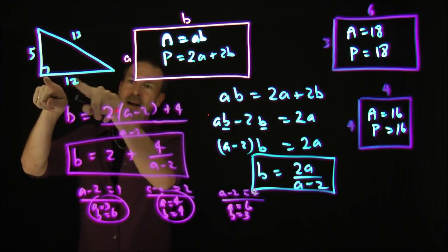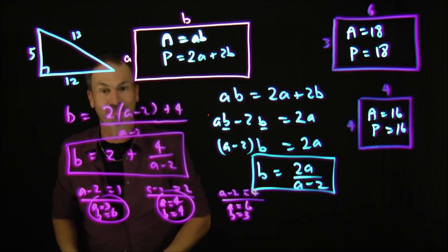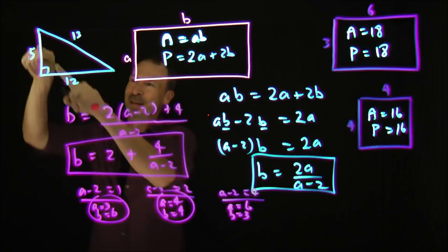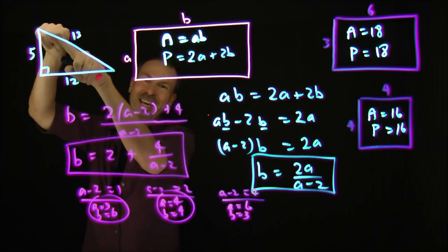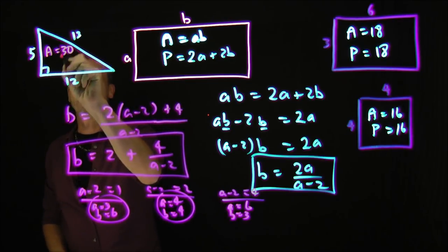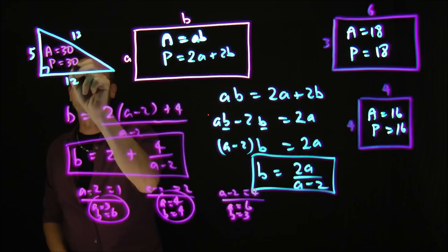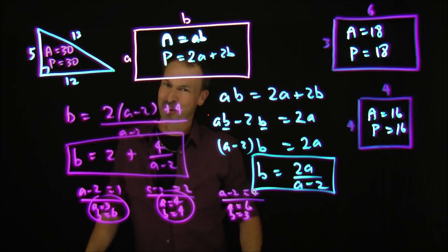The area of this thing, the area would be half the base, so half of 12 is 6 times height 5, area is 30. What's the perimeter of this thing? Perimeter is 5 plus 12 is 17 plus another 13 is 30. Area is 30 units squared. Perimeter is 30 units. This is an integer right triangle with the property that area and perimeter have the same numerical value.